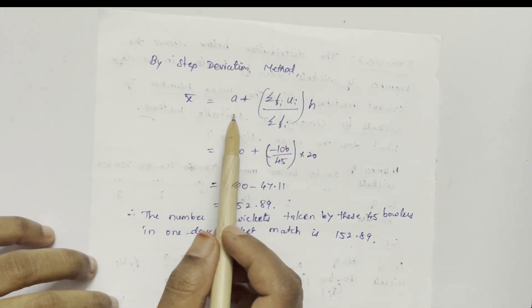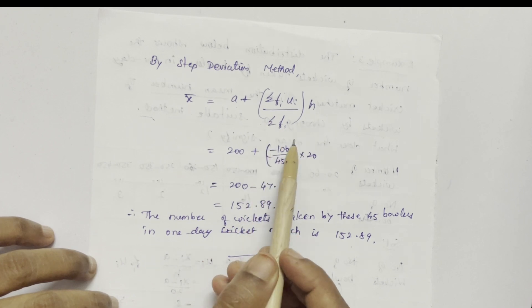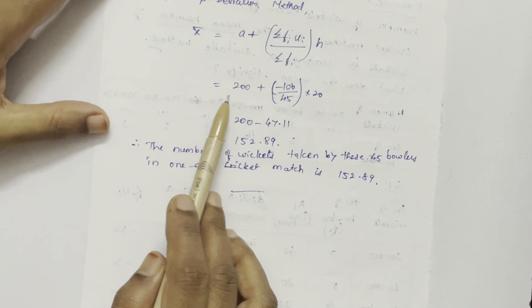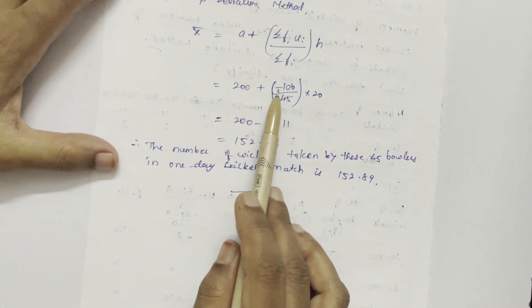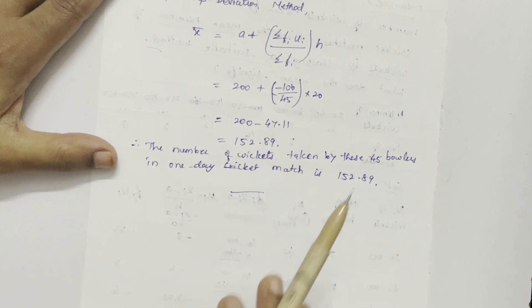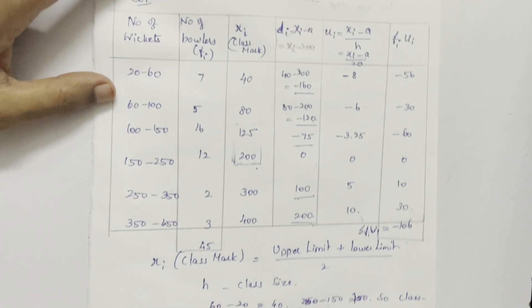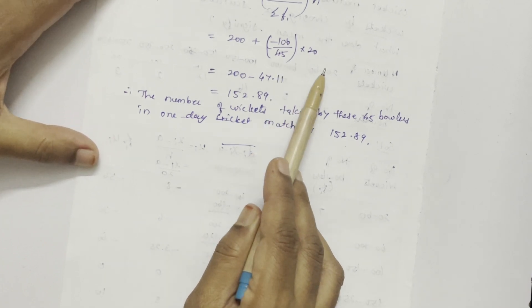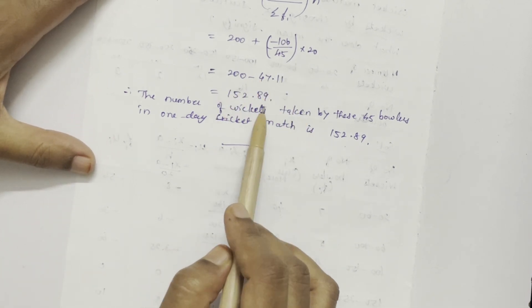By step deviation method, X bar is equal to A plus sigma FI UI by sigma FI into H. And we have taken A as 200. So 200 plus sigma FI UI is minus 106 by 45. 45 is sigma FI into H. H is 20. And multiplied and found the answer.